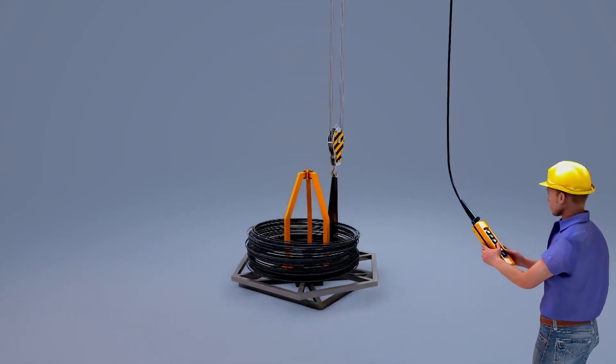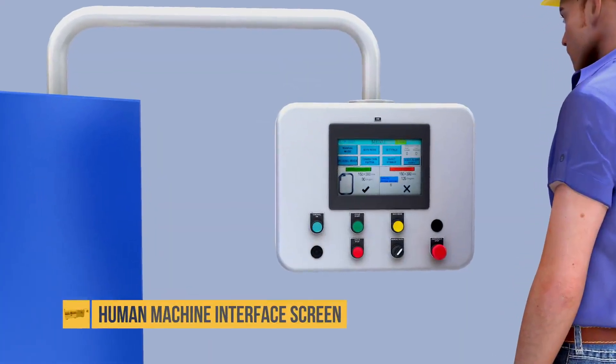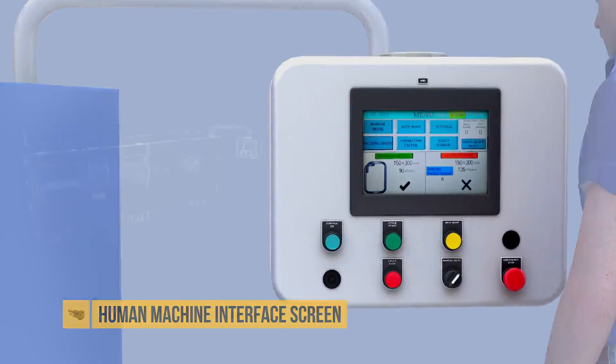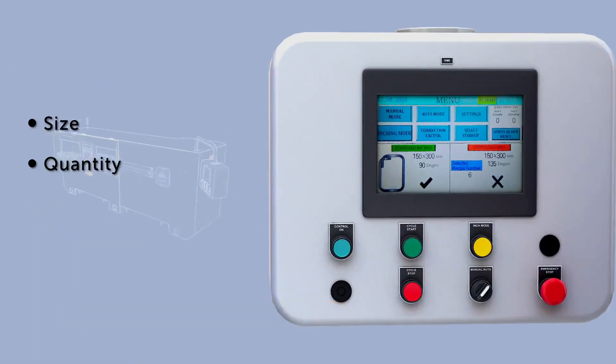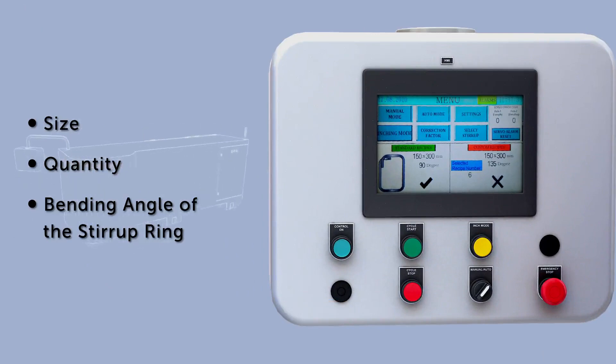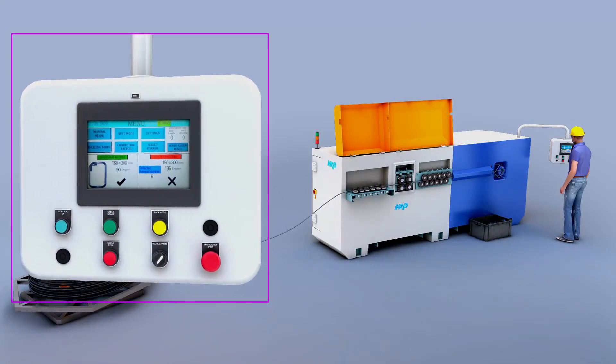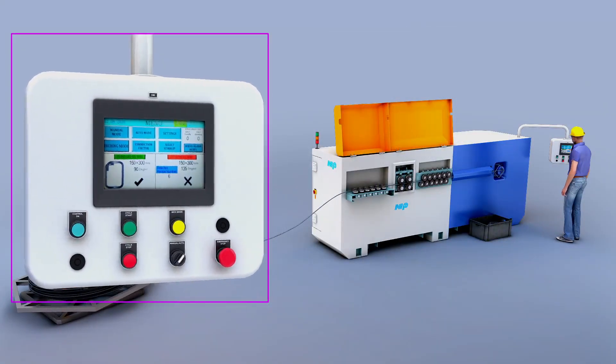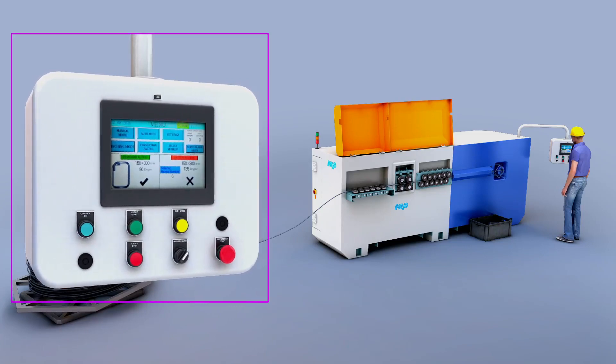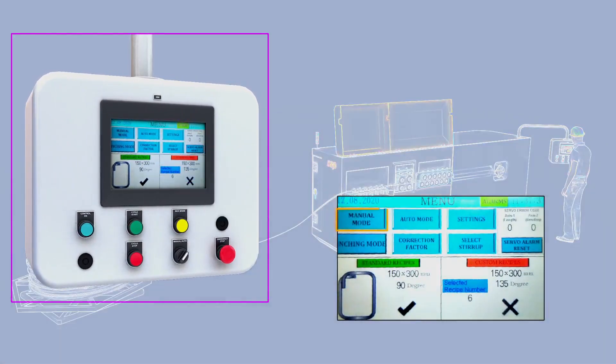The process starts from coil loading. The operator needs to use the human machine interface screen for details like size, quantity, and bending angle of the stirrup ring. It additionally stores multiple programs of standard rings. The operator can also use manual mode for ring setting and auto mode for production.